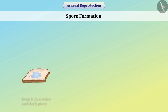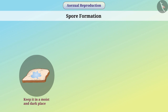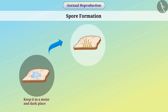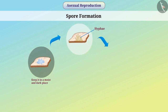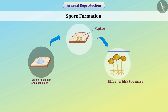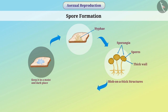Spore Formation: If you take a piece of bread, soak it in water, and keep it in a moist and dark place, then within one or two days you will see some thread-like structures developing on it. This is the hyphae of Rhizopus. If you observe the vertical fibers with a microscope, you will see blob-on-a-stick structures called sporangia. Special cells found in these structures are called spores, and a thick wall protects them. Under favourable conditions, this wall breaks and spores get spread. At appropriate temperatures and humidity, these spores begin to grow and form new fungus. This method of reproduction is known as spore formation.